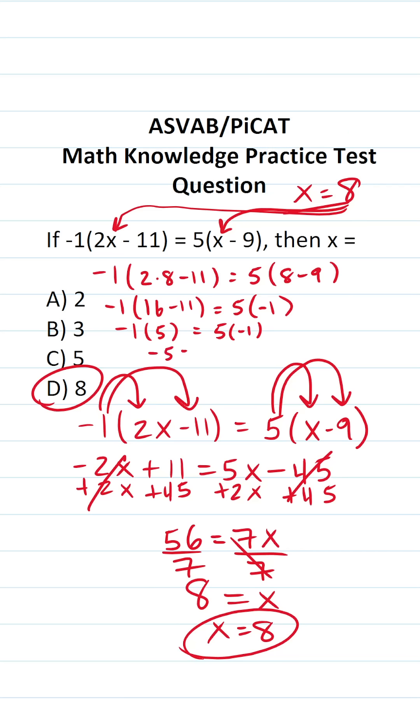This is negative 5 equals negative 5, which is a true statement, so I'm confident that D is, in fact, the correct answer.